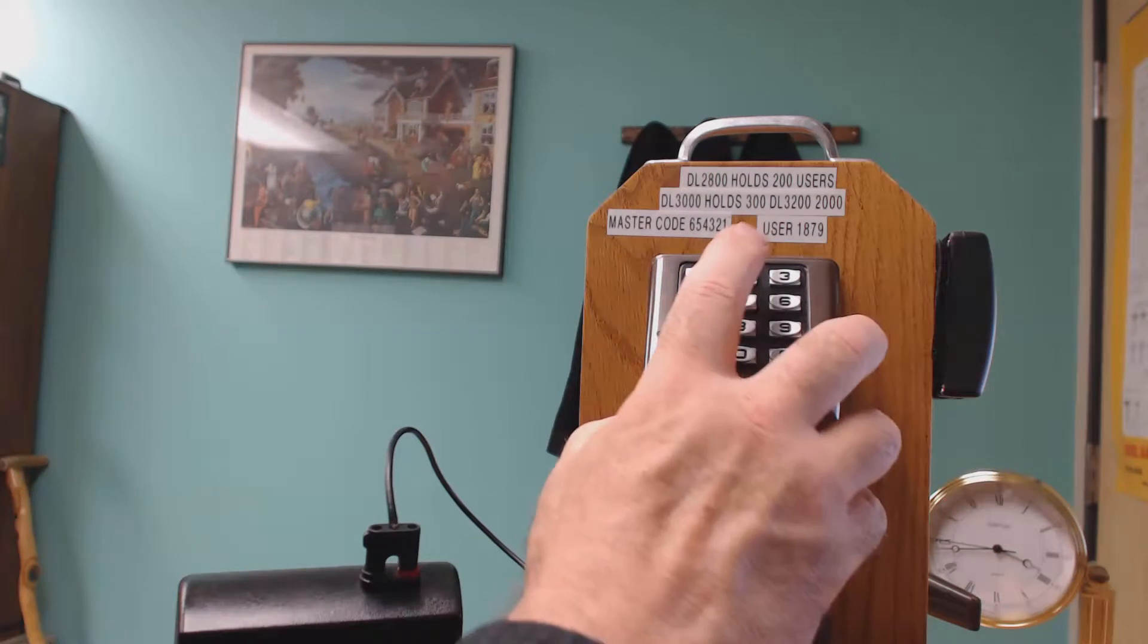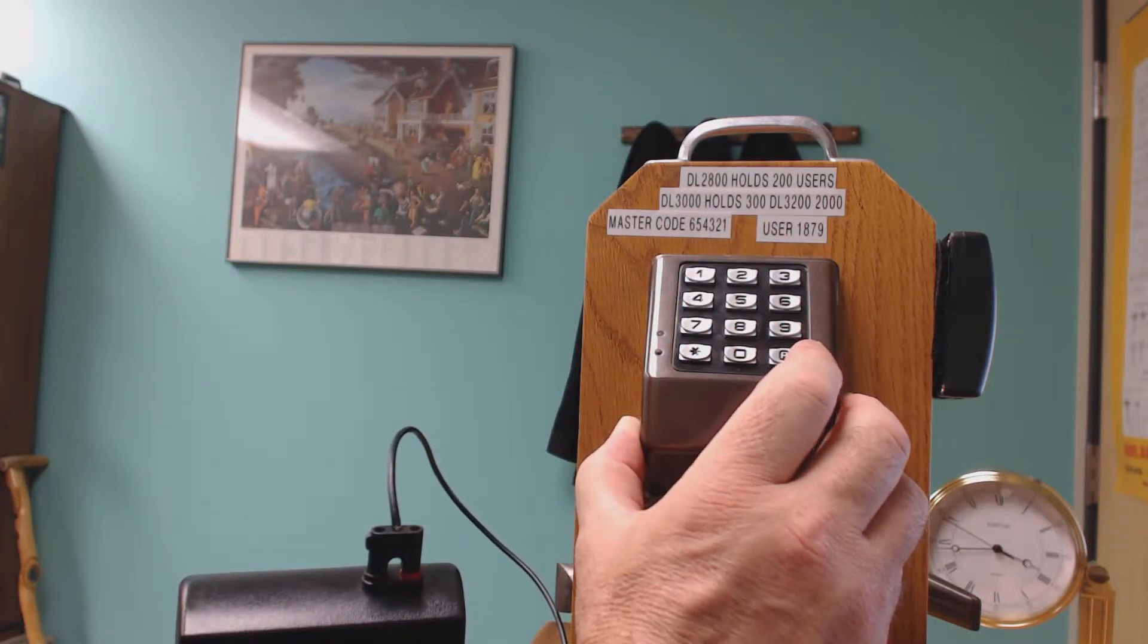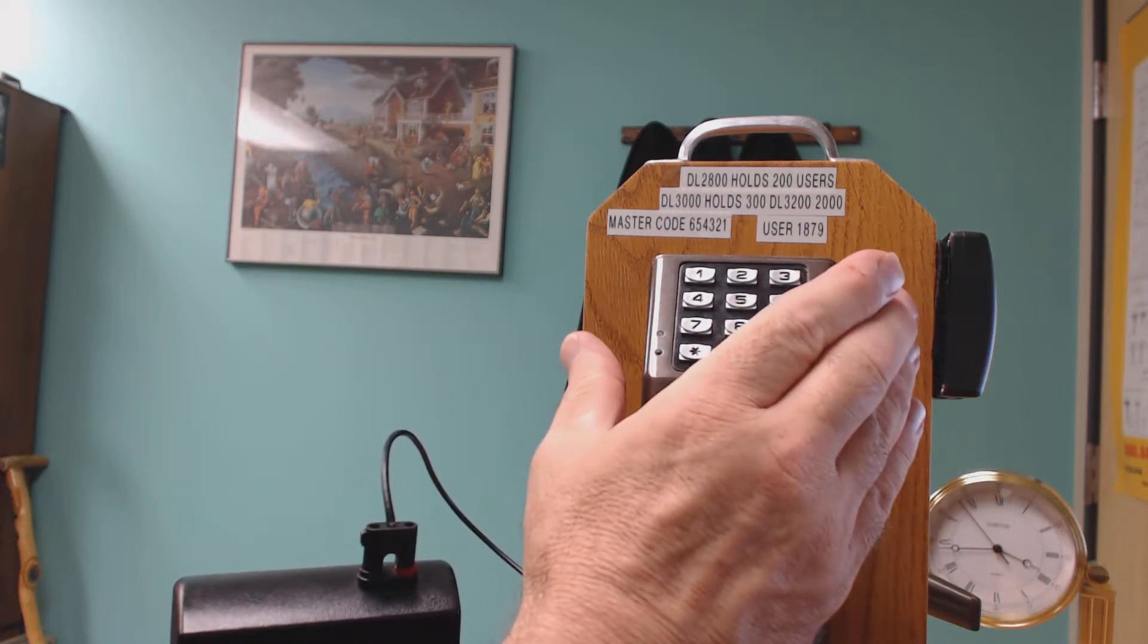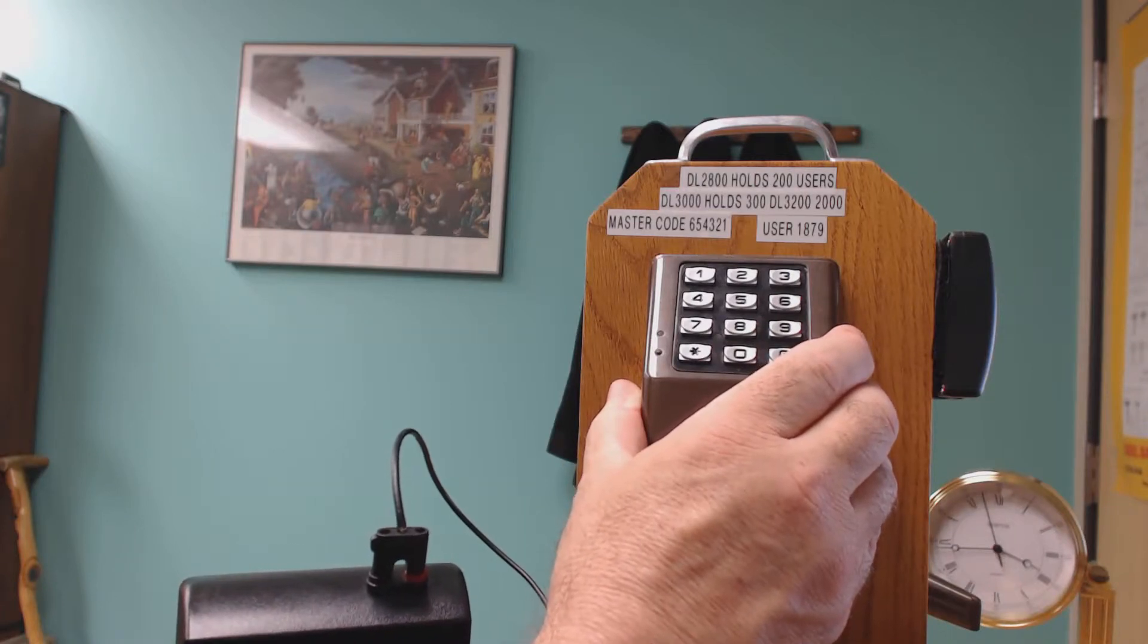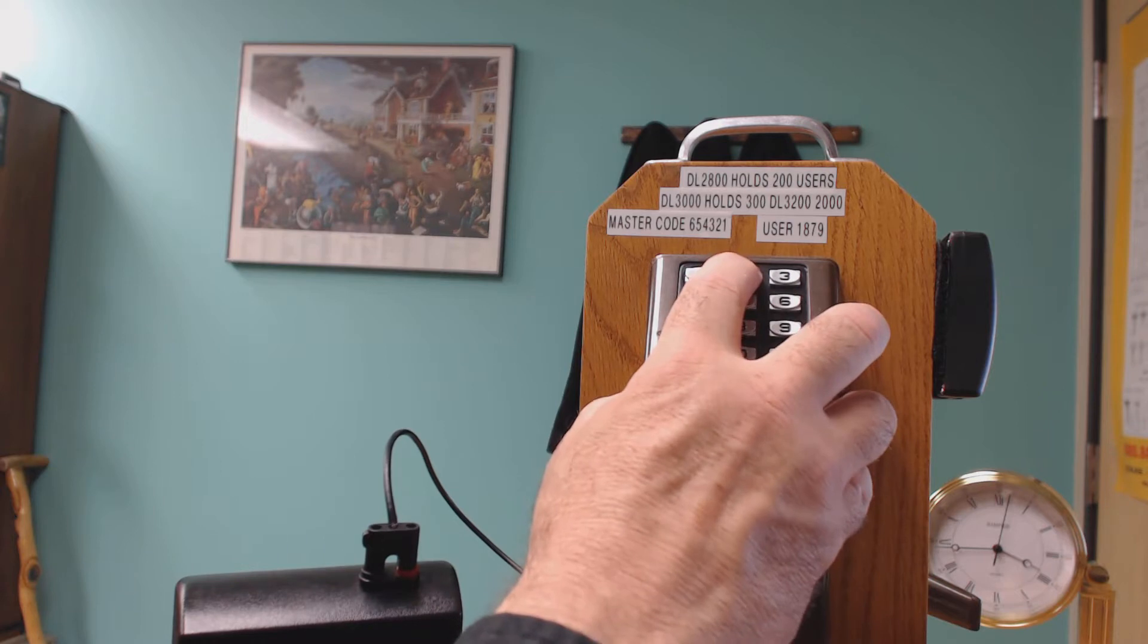Now we're going to program the DTM code, which is function 2. The DTM code lives in slot number 299 in the lock, so it's like the address in the lock. 299 is the address. So here we go: A, 2.